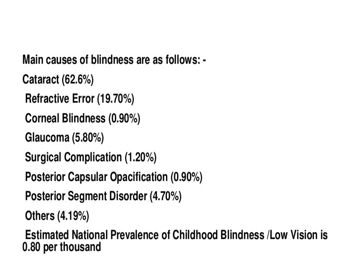The causes of blindness include: cataract at 1.1%, then refractive errors, corneal blindness, glaucoma, surgical complications, posterior capsular opacification, posterior segment disorders, and other causes. The estimated national prevalence of childhood blindness or low vision is 0.80 per thousand.